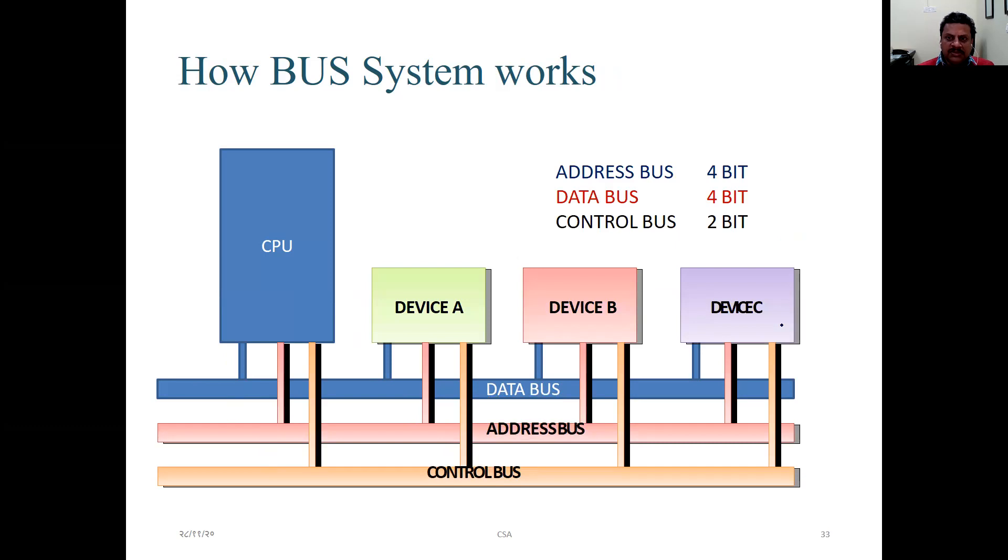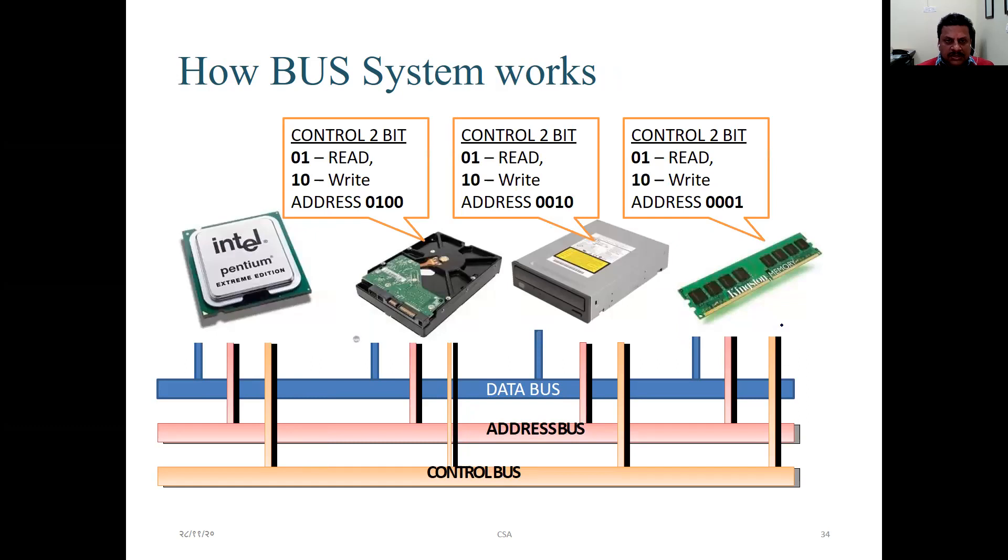Address bus 4-bit, data bus 4-bit, control bus 2-bit. Then the same operation which we have done earlier in terms of instructions, that is being depicted here, how the bus system works. That is control 2-bit and example is being sorted out.